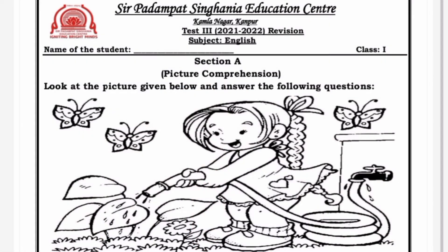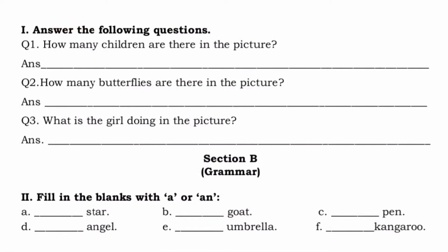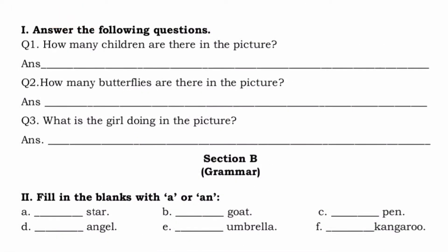So kids, let's begin with Section A. Section A is of picture comprehension. A picture will be given to you like this and then a few questions related to the picture will be asked to you. So kids, what can you see in the picture? We can see that there is a girl who is watering the plants and there are a few butterflies which are flying nearby. So come, let's see a few questions related to the picture.